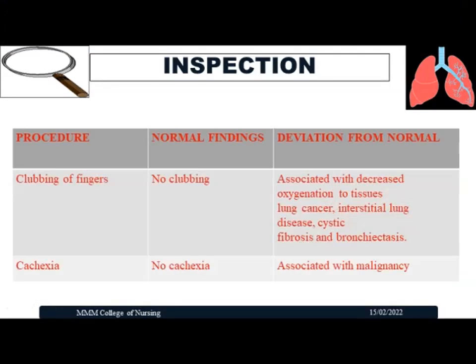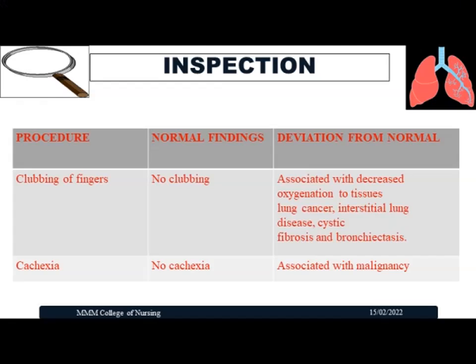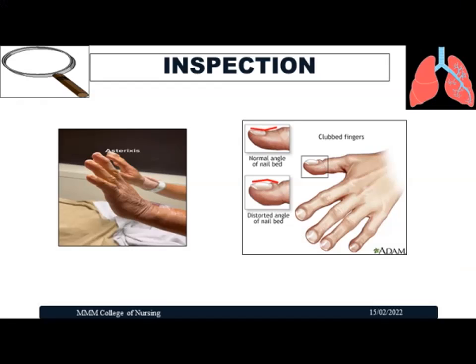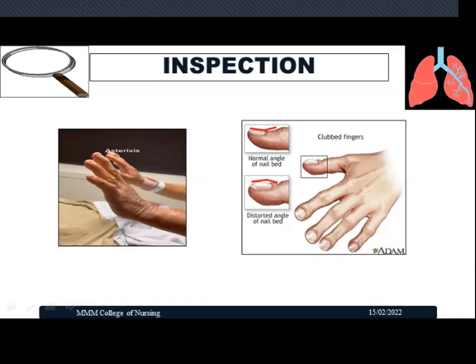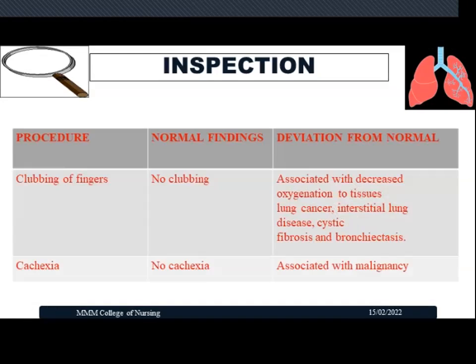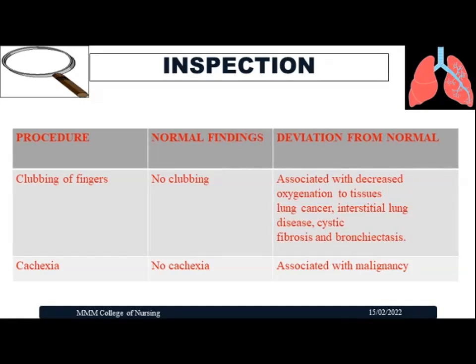Next, assess for clubbing of fingers, an important indication of cyanosis or decreased oxygenation to the tissues — causing hypertrophy of tissues. The normal angle of the nail bed is less than 160 degrees. When this angle increases to more than 160 or 180 degrees, clubbing is indicated. When keeping fingers together, if the Schamroth window sign is not visible, this indicates clubbing. Clubbing is associated with lung cancer, industrial lung disease, cystic fibrosis, bronchiectasis, or chronic COPD.